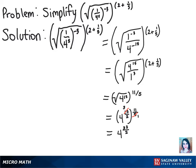And we know that this is the same thing as the square root of 4 to the 33rd power. And the square root of 4 is 2, so our final answer is 2 to the 33rd power.